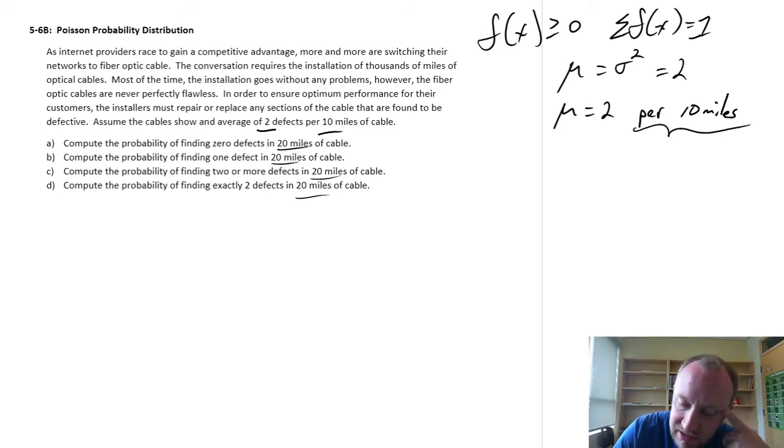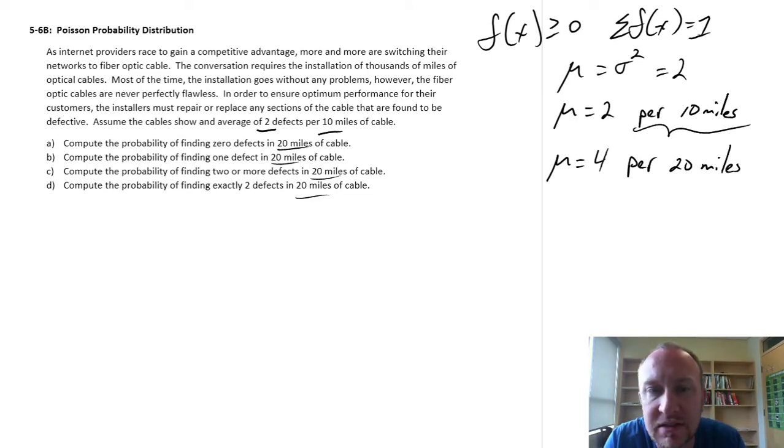So if this is 2 defects per 10 miles on average, well then that means we have to scale this to 2 times, if there's 2 every 10, then there's 4 per 20 miles. So we have to scale our mean up to be more relevant for the problem that we're dealing with. So there's some consistency here.